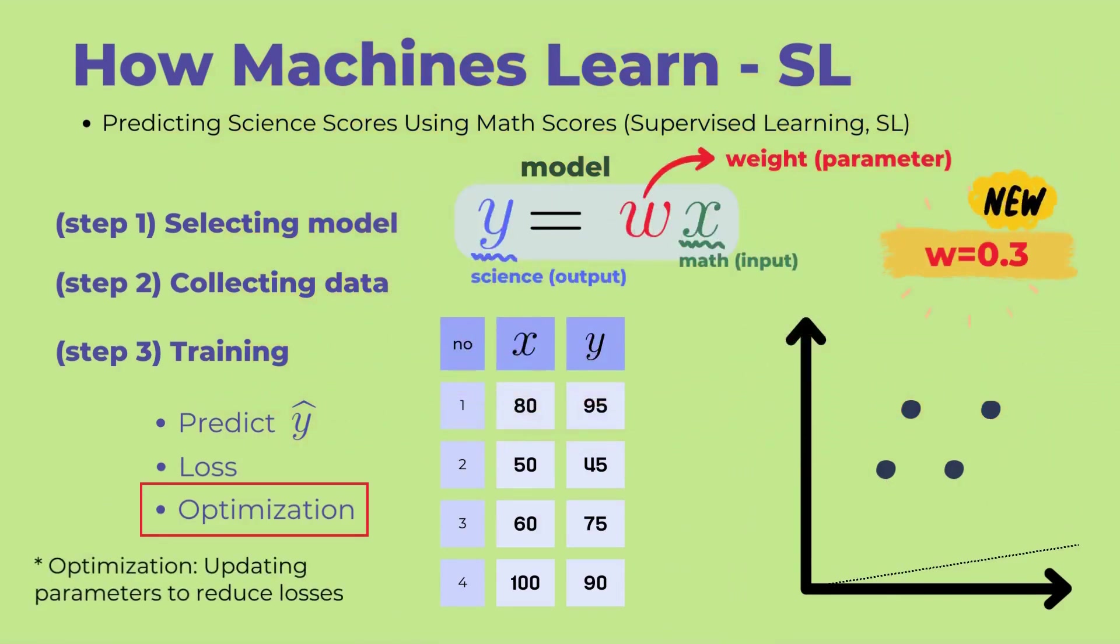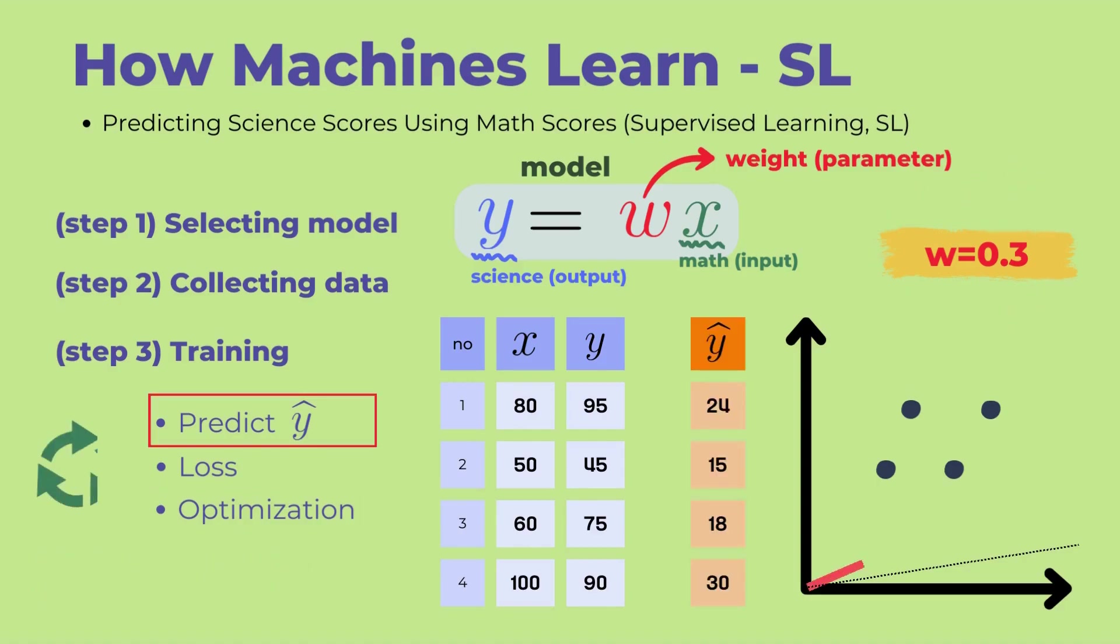The third step in the training phase is optimization. Optimization refers to updating the parameters, or weights, in such a way that the loss decreases. In this example, let's assume the W value has been updated from 0.1 to 0.3. In the graph on the right, you can see that the updated W value makes the model fit the data more closely than before. However, it still seems to require further adjustments.